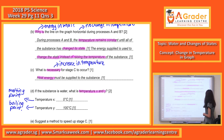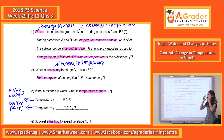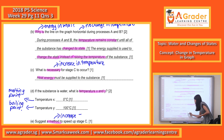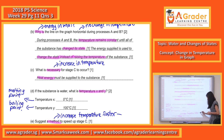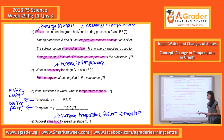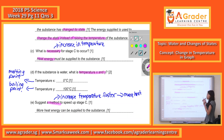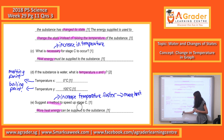Now let's look at the last one. Suggest a method to speed up stage C. Basically, to speed up stage C means to speed up the rate of increase of temperature — I want the temperature to increase faster. So what must I do to increase the temperature at a faster rate? I need more heat. To supply more heat energy, you can add candles or put it over a bigger flame. The main thing you have to mention is: more heat energy is required. Thank you, bye-bye.